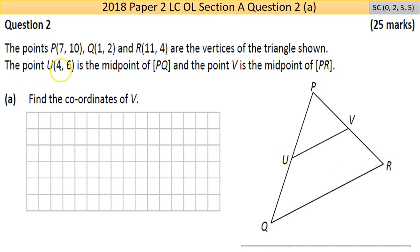The point U(4,6) is the midpoint of PQ. That's PQ, that's the U term or point there—the midpoint of those two points. And the point V here is the midpoint of PR—that's P and R there.